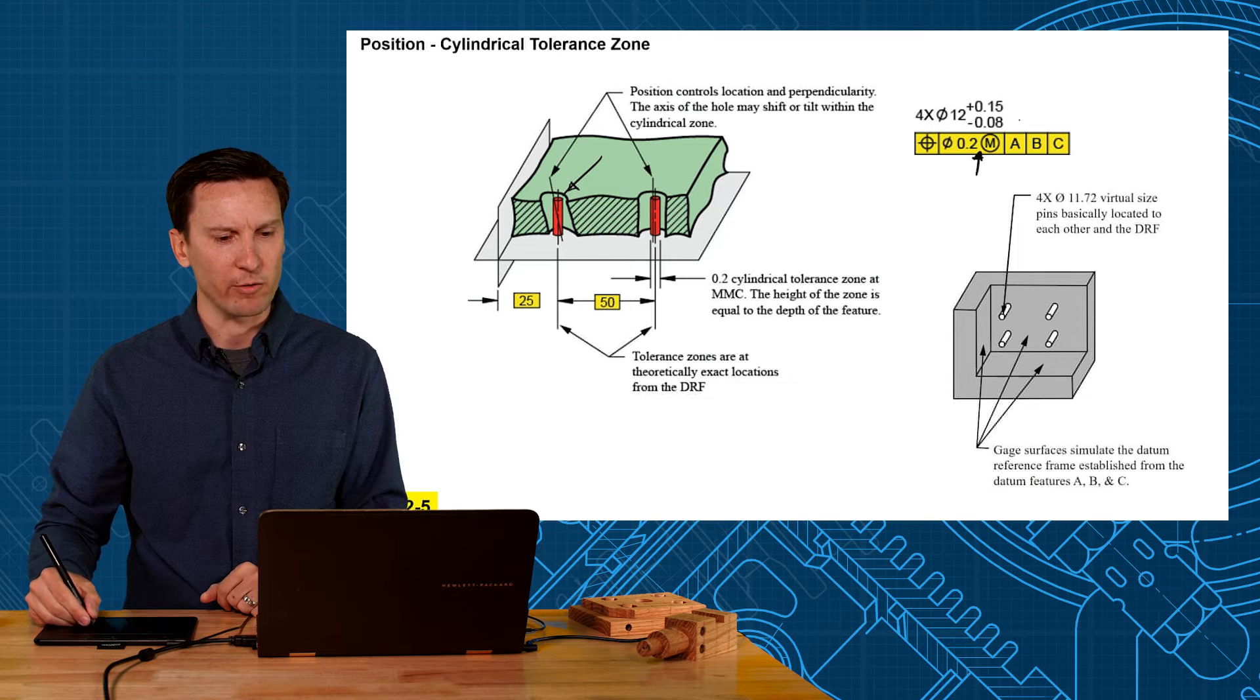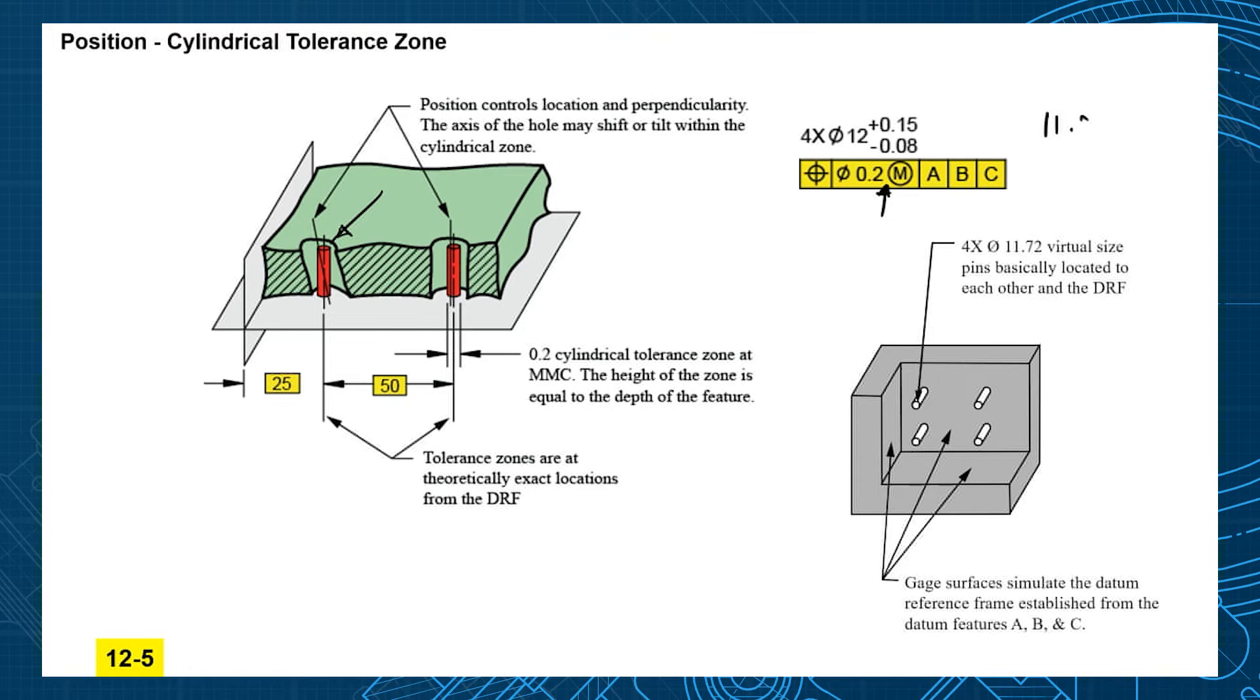So this position tolerance of 0.2 creates a virtual condition pin that the holes must clear. So remember in unit 7 we talked about virtual condition 11.92 is our maximum material condition, but when you subtract the position tolerance from it it creates an 11.72 virtual condition. So think of it as a gauge. If you built a gauge to check this part you would have a back plane for A, a bottom edge for B, and a side edge for C, and now your holes have to clear these four pins.